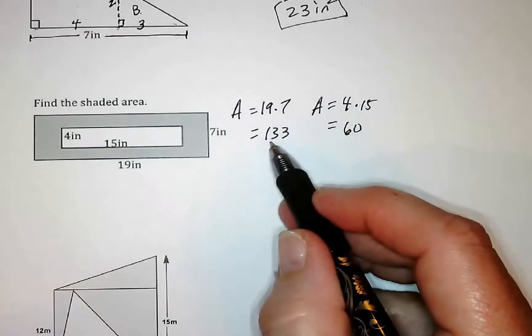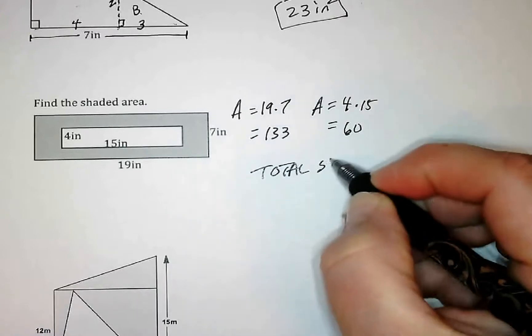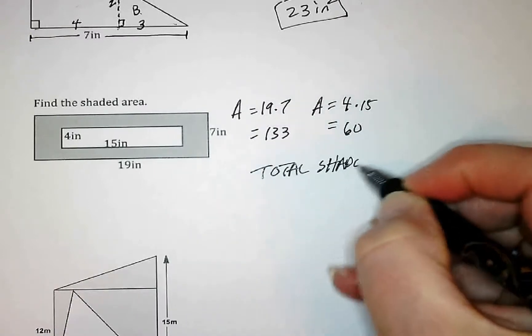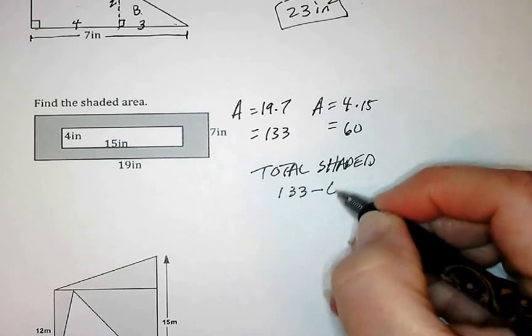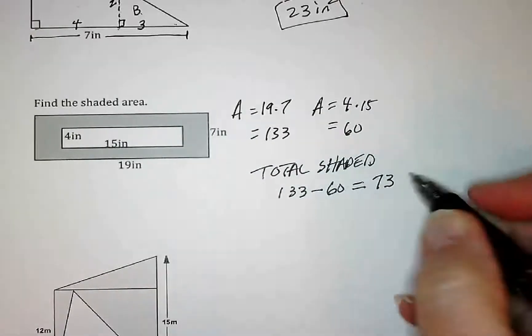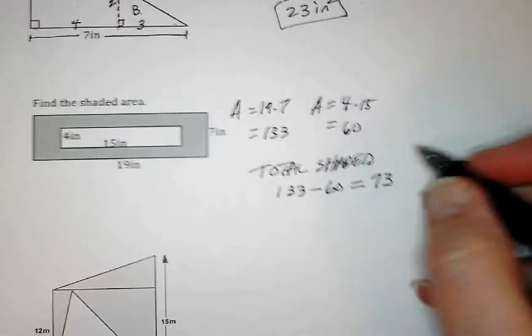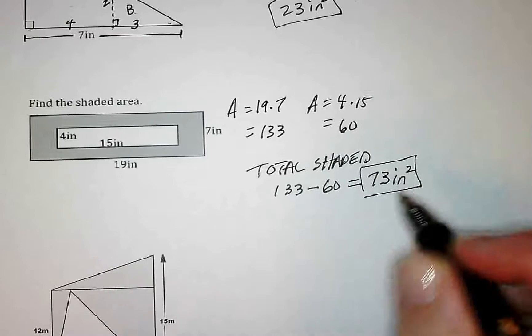So I have this much total. I'm just going to write here a little note. The total shaded is going to be 133 minus the middle part, and that, whatever's left, the 73, is my area for the shaded going around the outside edge. This is inches squared. So 73 inches squared would be the area of that shaded.